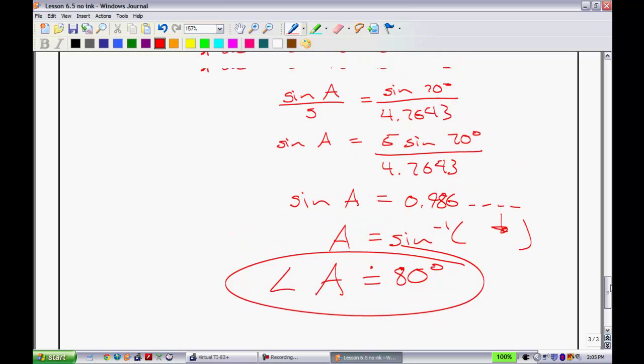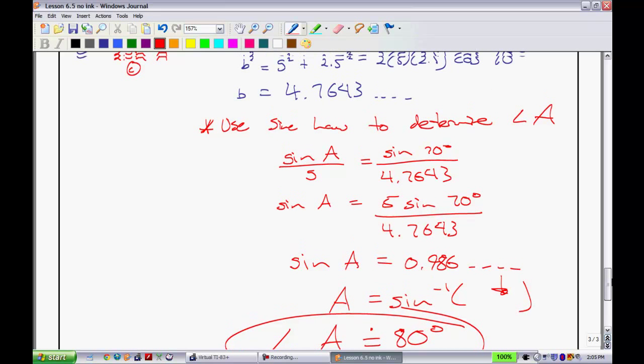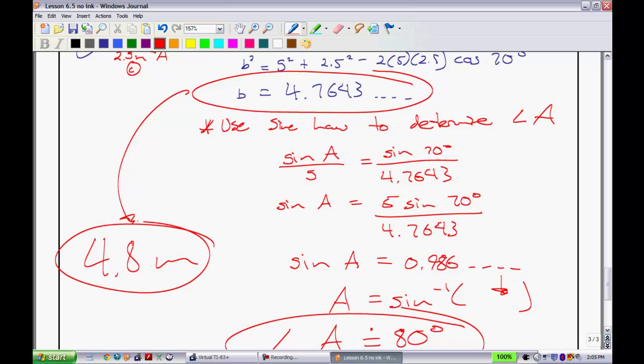So we found out that angle A is equal to 80 degrees. We found out that the length of the support is 4 point, I guess what we say, they wanted the nearest tenth of a meter, so we'd say that this is roughly equal to 4.8 meters. Okay. So that concludes this unit. Unit 6 trigonometry is in the books. In this lesson we learned about the cosine law and how you can use both the sine law and cosine law kind of in harmony here to deal with some of these tougher questions.